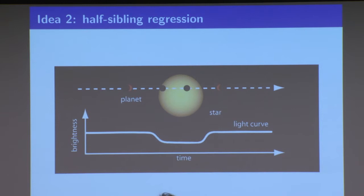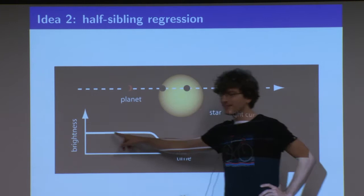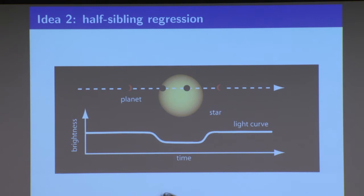Of course the data doesn't look clean — it more looks very noisy. The question is: can we find these dips in the light intensity curve?